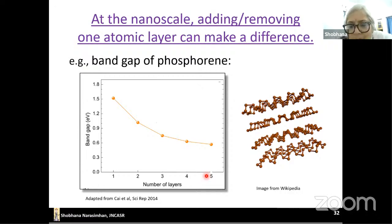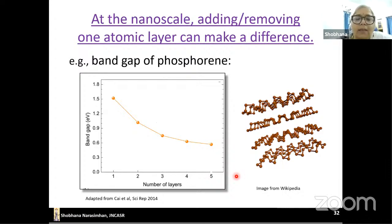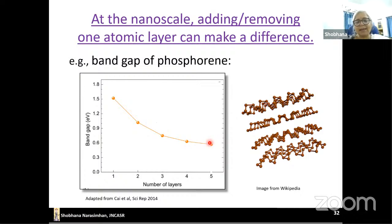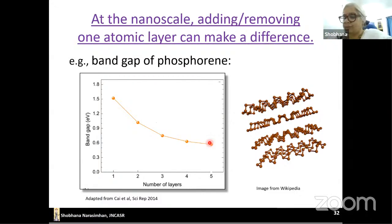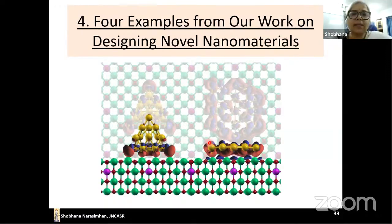Similarly in two-dimensional materials: graphene is a monolayer of carbon atoms. Another popular material is phosphorene — a monolayer of phosphorus atoms. If you take phosphorene and look at the number of layers — one layer, then add another, and another — the electronic band gap decreases sharply. The band gap is something very important for semiconductor devices. Adding or subtracting one monolayer of atoms makes a big difference.